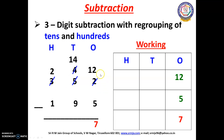Now we can subtract 14 minus 9. Open your fingers, children: 9 after — 10, 11, 12, 13, 14. How many fingers have you opened? Yes, we have opened 5 fingers. So we have to write 5 here.